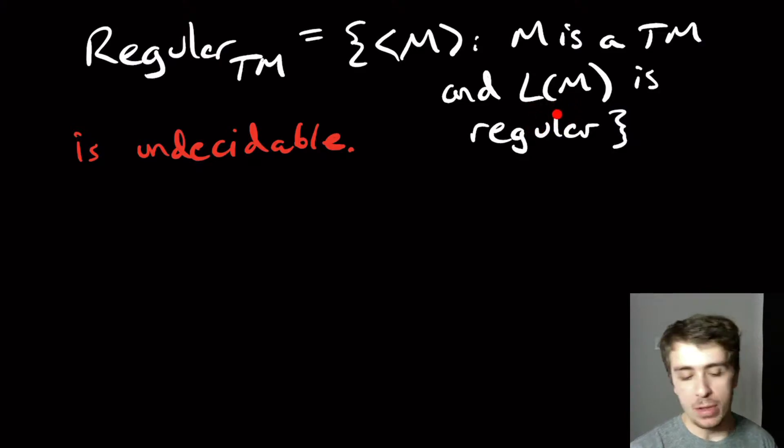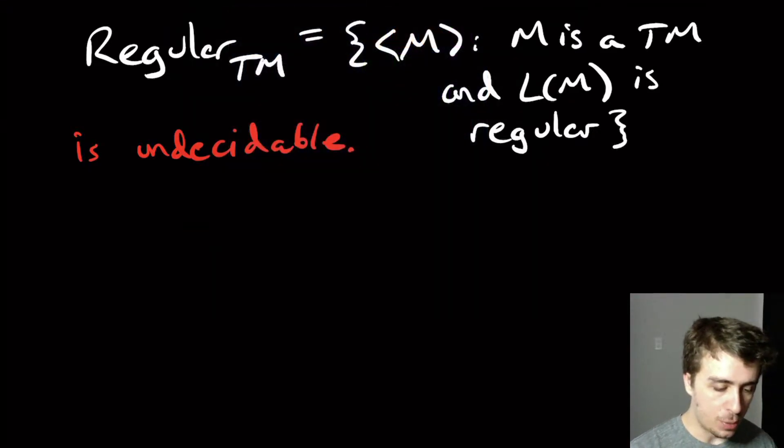You may want to know whether this is possible, because maybe we have some Turing machine and we want to figure out whether there's a simpler version of that same machine, like a DFA. It turns out that this is undecidable, sadly. So how are we going to prove this?